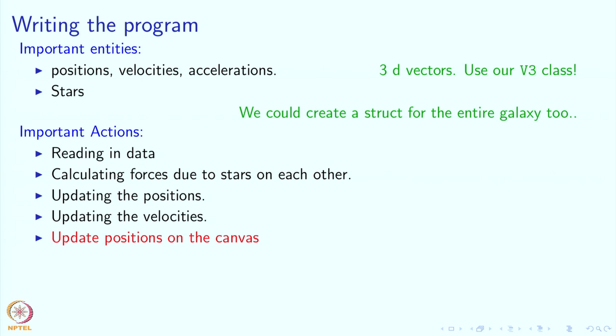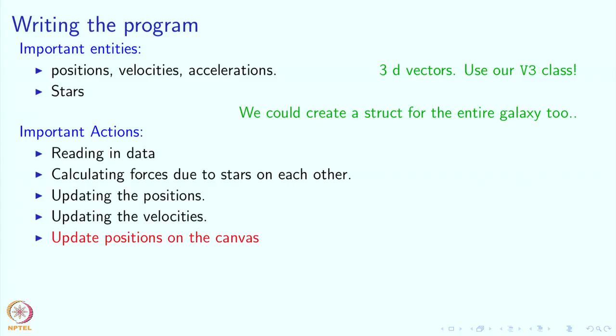This suggests what functions we should have. We said at some point that if something is an important action then we should make it into a function or a member function. We will almost do that — if something happens to be really tiny, maybe we will just write it directly rather than making it a function. But in general, if something is important we should make it have a name in our program by making it a function or a member function.